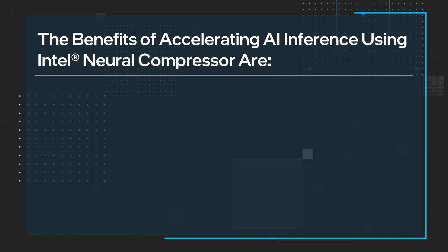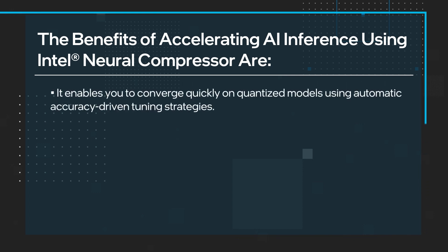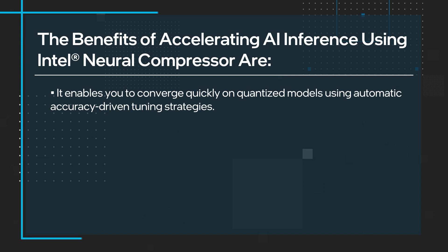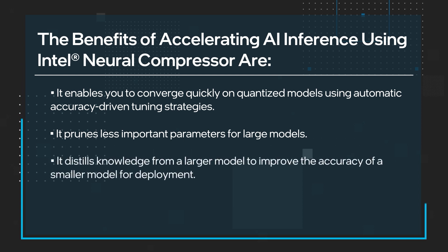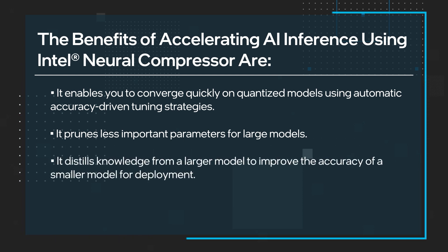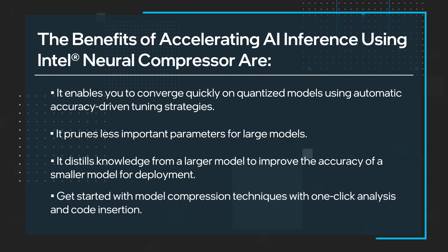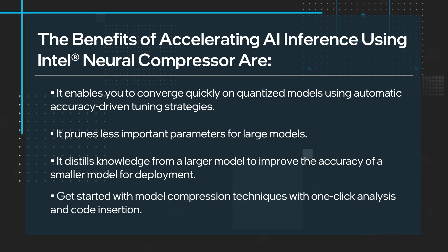The benefits of accelerating AI inference using Intel Neural Compressor are that it enables you to converge quickly on quantized models using automatic accuracy-driven tuning strategies, it prunes less important parameters for large models, it distills knowledge from a larger model to improve the accuracy of smaller model deployment, and you can get started with model compression techniques with one-click analysis and code insertion. Read the full technical article to get an in-depth look at the tool and learn how you can get started with Intel Neural Compressor.